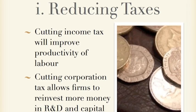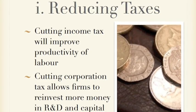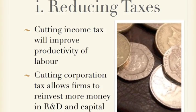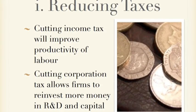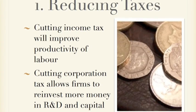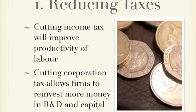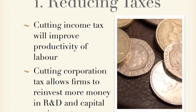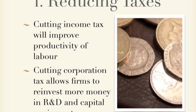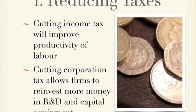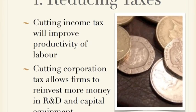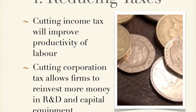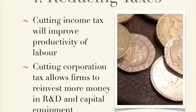The first policy is reducing taxes. If you reduce income tax, people will work more enthusiastically because they're getting more money and are more motivated, so they're likely to produce more. And if you cut corporation tax, this gives firms more profit to reinvest into the business to increase productivity, or to reinvest into training of staff or capital equipment improvements. So like this, you get more out of the fixed amount of resources you have.